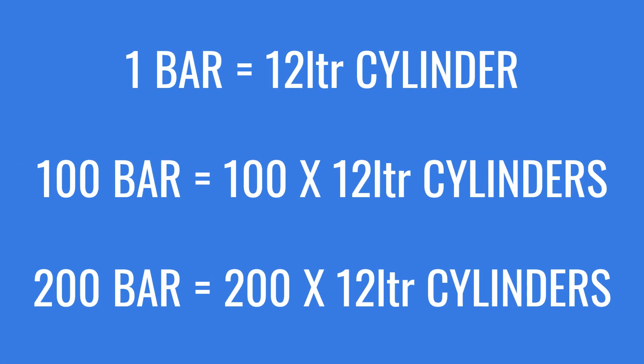Picture a 12-liter cylinder. When they fill that cylinder up with air to 200 bar — so when you look at your gauge and it says 200 bar — what that effectively means is that you have 200 of those 12-liter cylinders all compressed into one cylinder. That roughly gives you about 2400 liters of air in that tank.